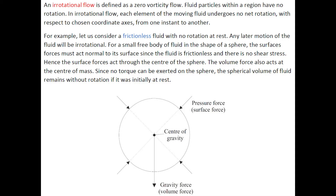An irrotational flow is defined as a zero-vorticity flow — fluid particles within a region have no rotation. In irrotational flow, each element of the moving fluid undergoes no net rotation with respect to chosen coordinates from one instant to another. An example is a frictionless fluid with no rotation at rest, and one may consider a spherical particle of fluid.